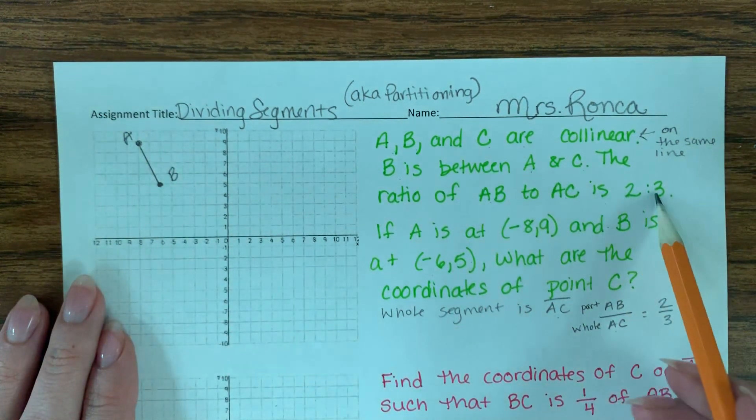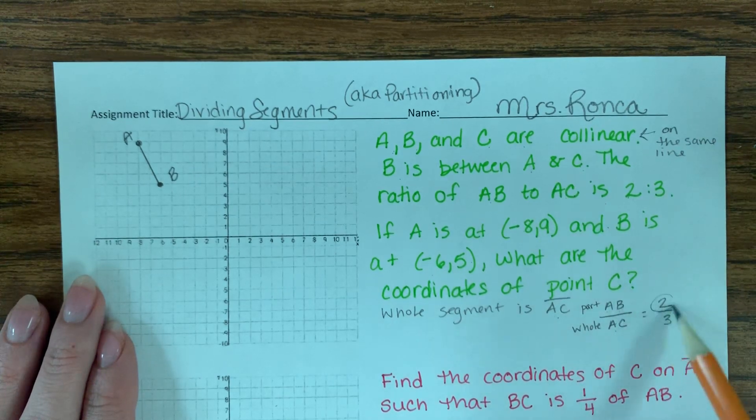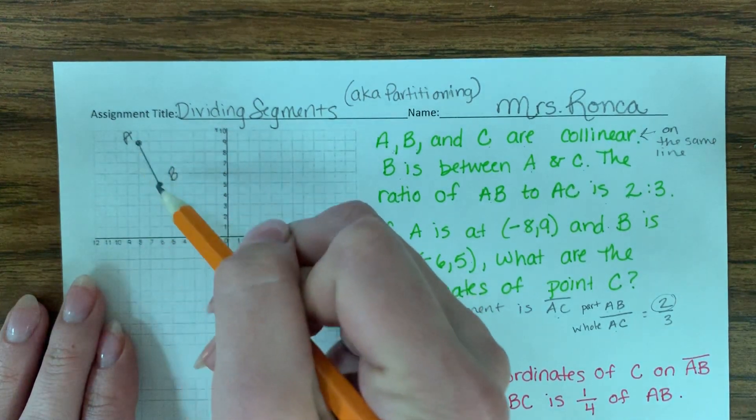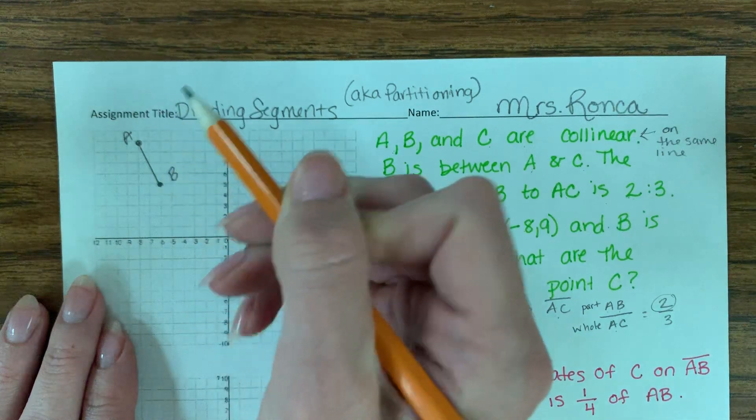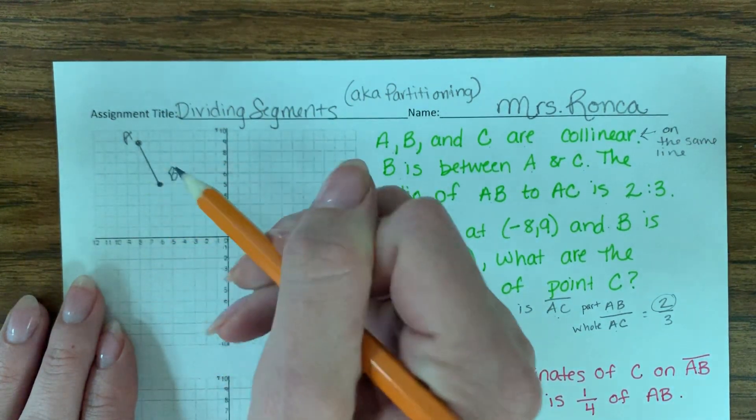B is somewhere between A and C. And then they gave me some clues to figure it out. So they gave me from A to B, and they're telling me that that represents two sections. So if I can figure out what the move is to get two sections out of this, which is basically going to be the slope,